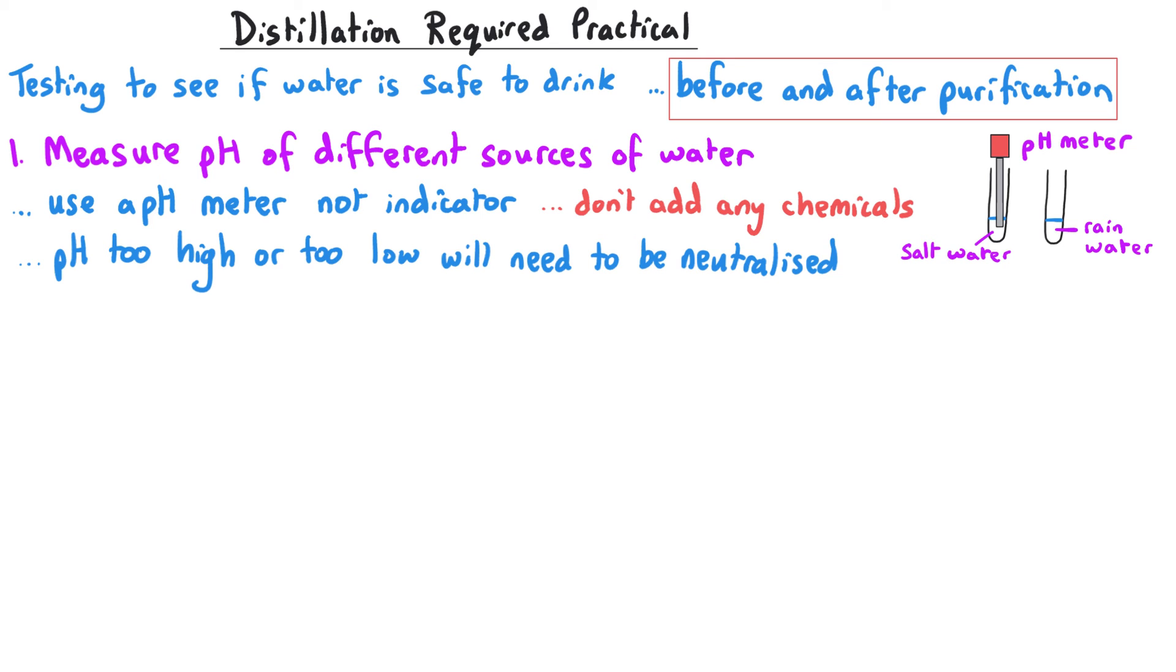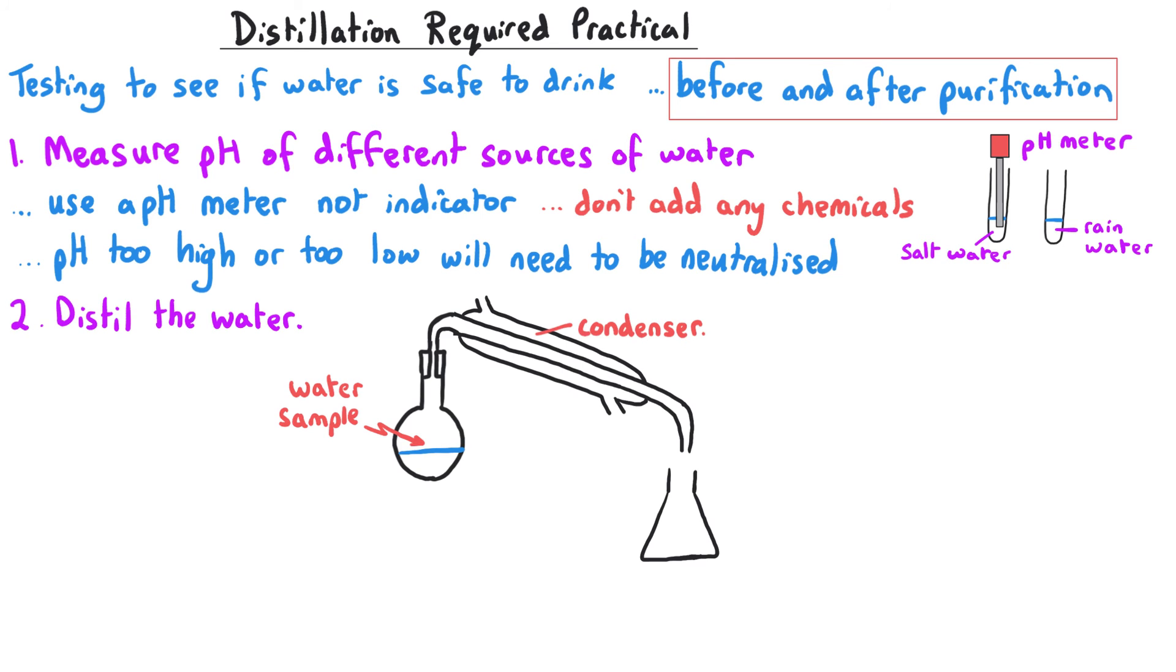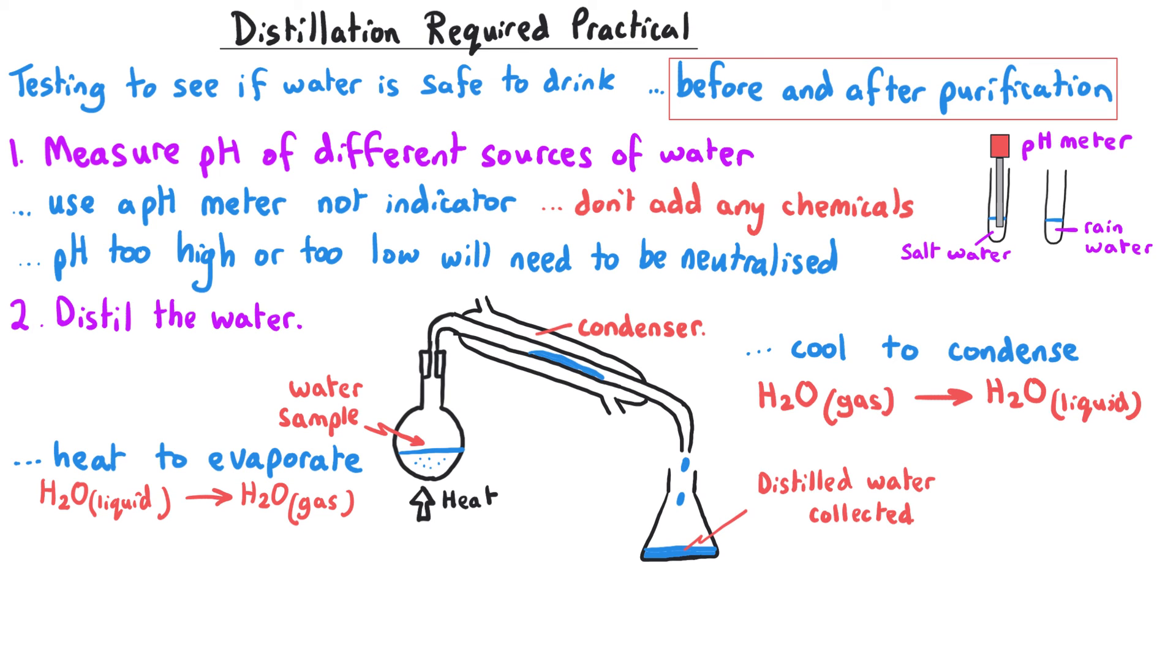Having measured the pH, the next step is to distill the water. You would heat the water in a flask to evaporate it, then as the water moves away from the heat source it will cool down and condense from a gas back into a liquid. This will leave any dissolved solids such as salt behind in the original container, and we will collect distilled water on the right hand side which will no longer have any dissolved salt in it.